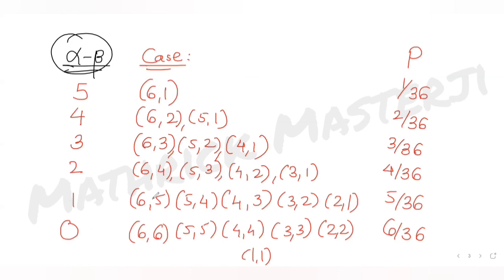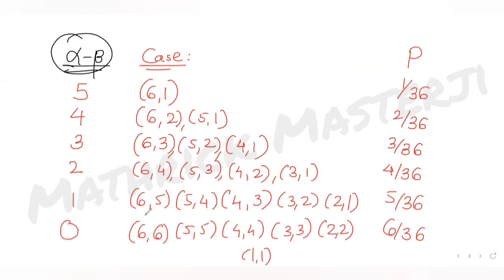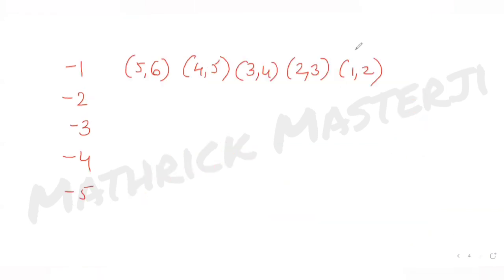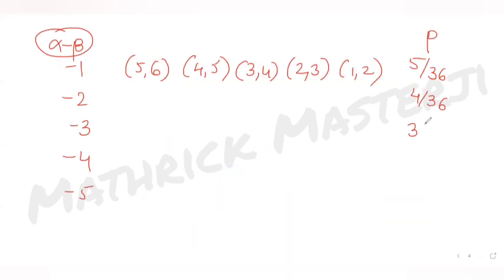For negative differences, the outcomes are just inverted. So the probability for difference -1 is the same as for +1, which is 5/36. Similarly, difference -2 gives 4/36, difference -3 gives 3/36, difference -4 gives 2/36, and difference -5 gives 1/36.